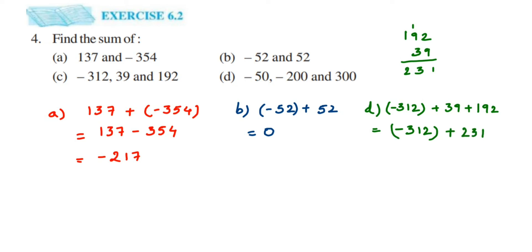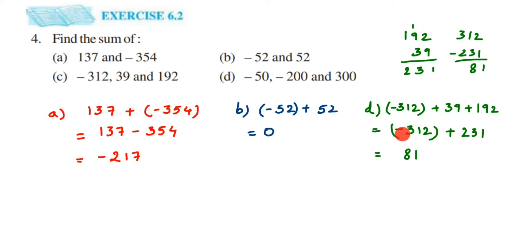So now we have -312 + 231. Next, check the signs — one is negative and one is positive, so different signs mean we subtract: 312 - 231 = 81. What is the sign of the final answer? Which is greater, 231 or 312? It's 312, and its sign is negative, so the final answer is -81.